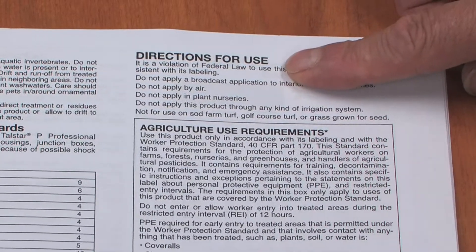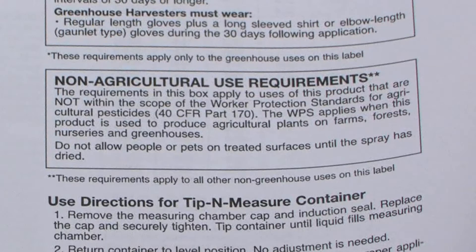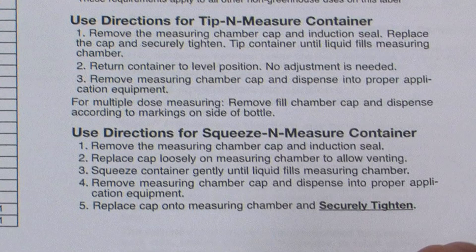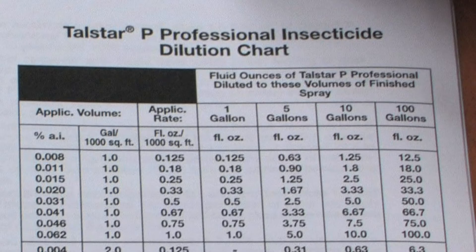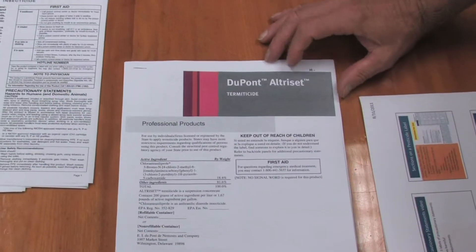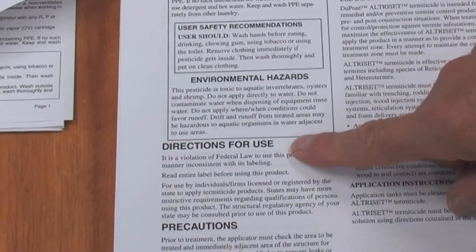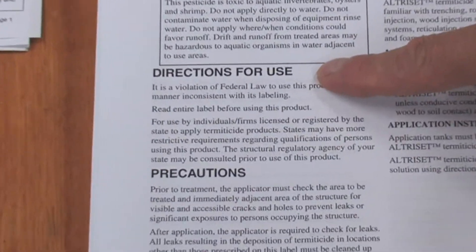It gives you the directions for use on where you can use it, like agricultural use requirements and non-agricultural use requirements, how to measure it out appropriately, and then a table on how much to mix up in the appropriate gallonage of water and how you can put it out effectively.